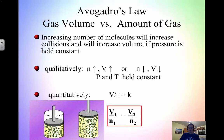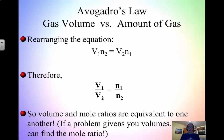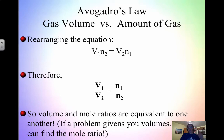Quantitatively, V1/N1 = V2/N2. You can also write it as N1/V1 = N2/V2 — it doesn't matter which way, as long as N1 and V1 are on the left and N2 and V2 are on the right. If you rearrange, you find V1/V2 = N1/N2, which goes back to the law of combining volumes — volume and mole ratios are equivalent to one another. So if a problem gives you volumes, you can find the mole ratio, which is very useful when working with gases.